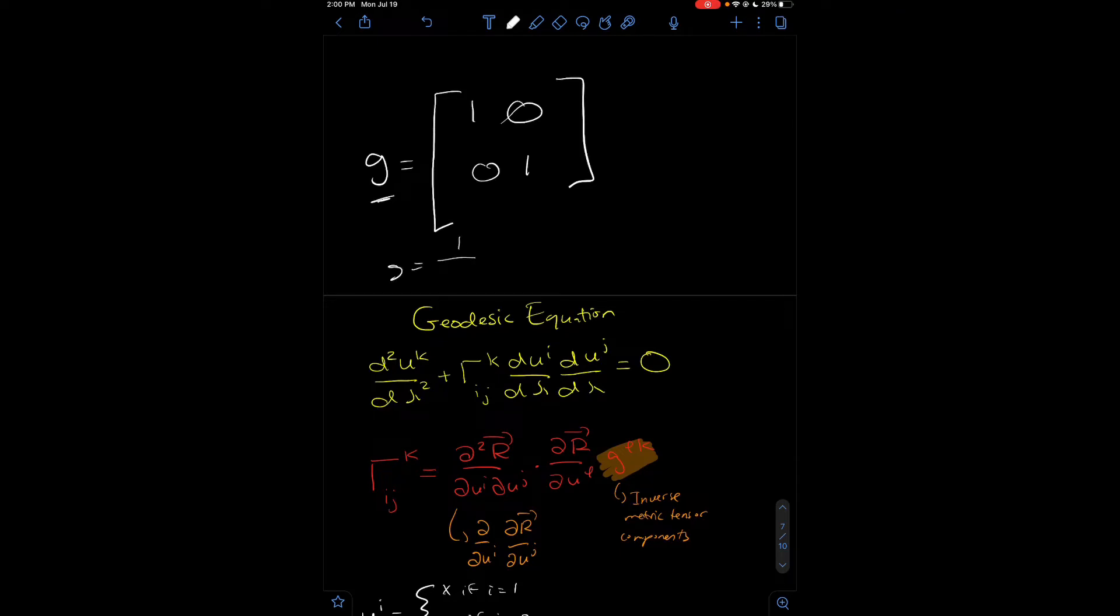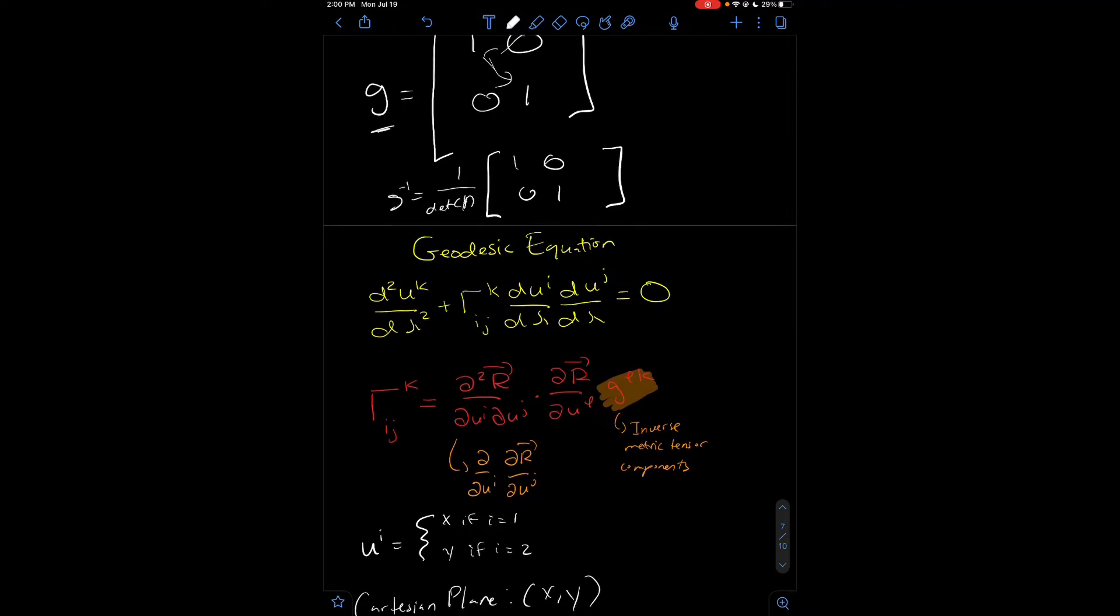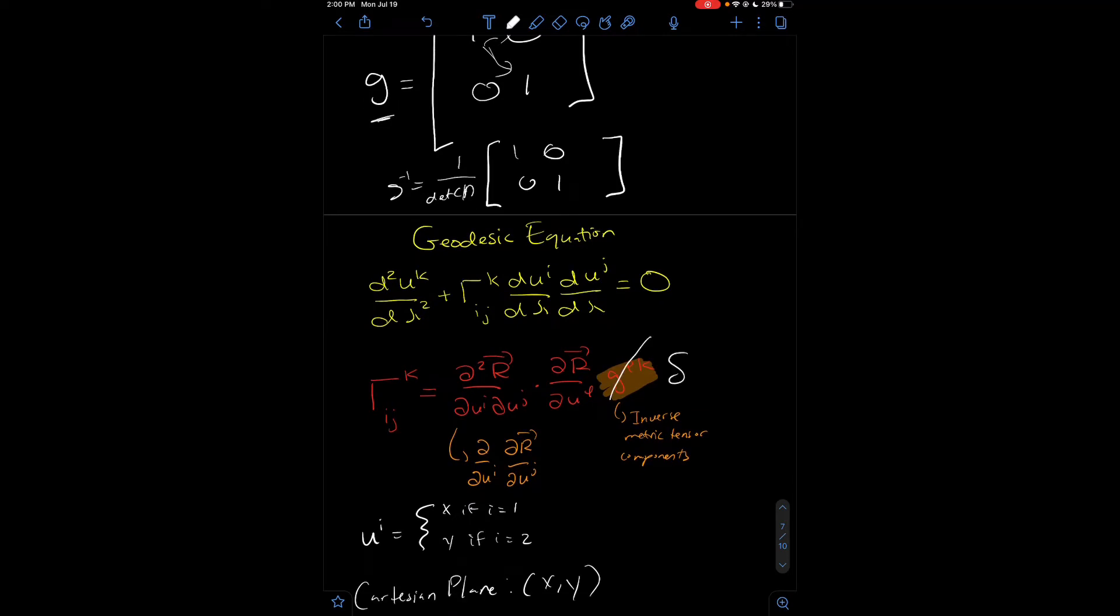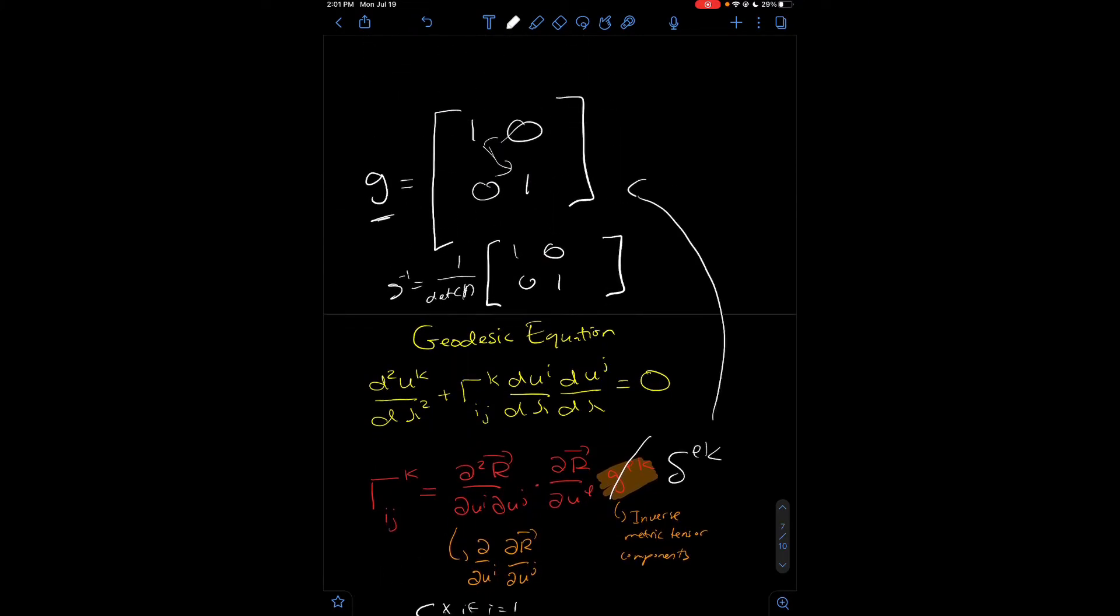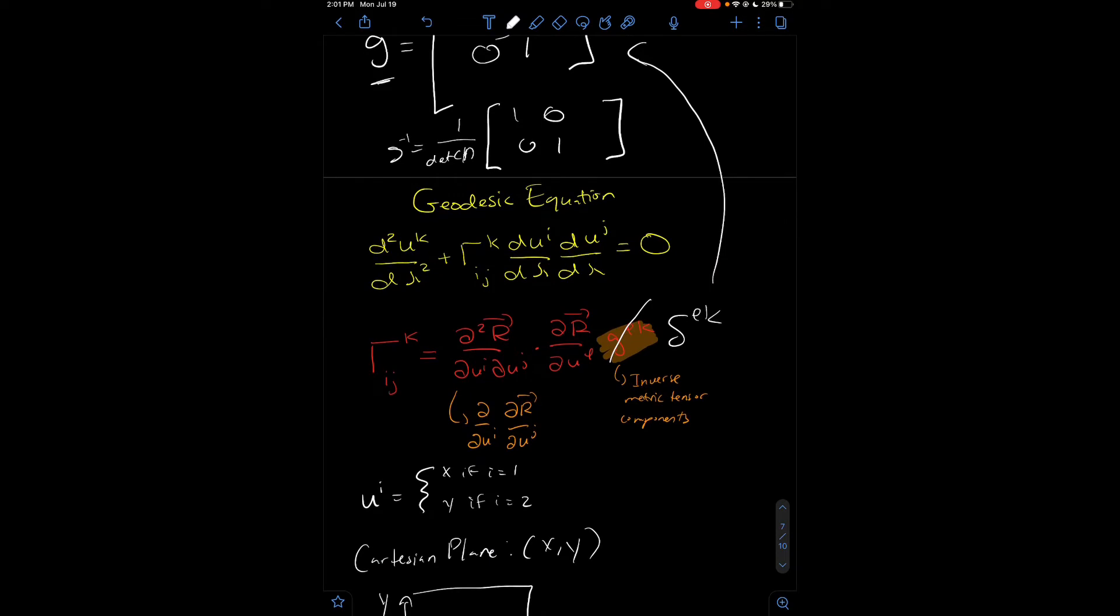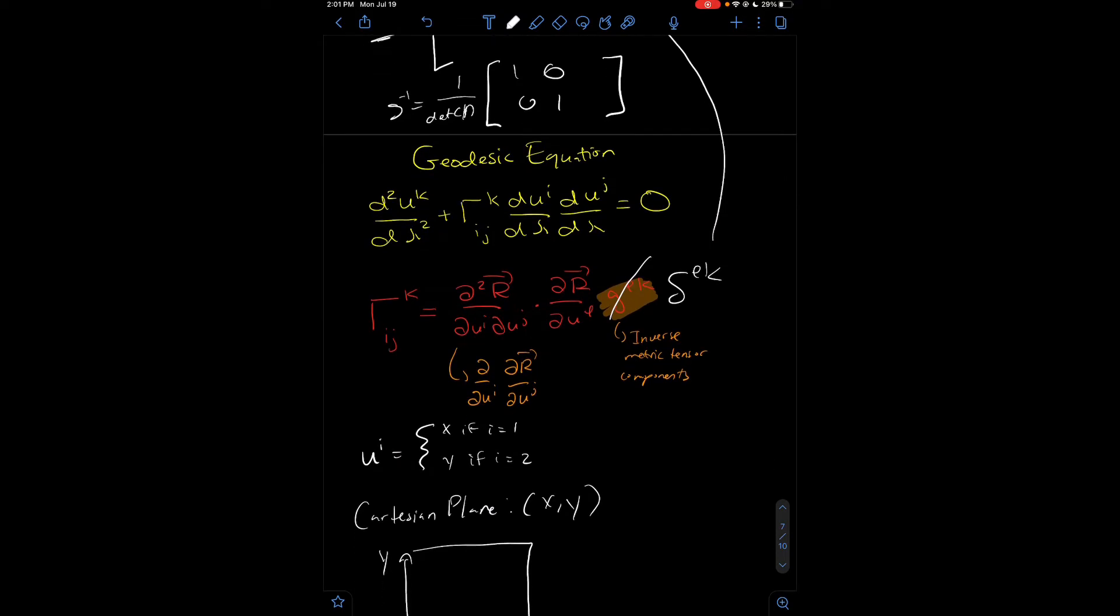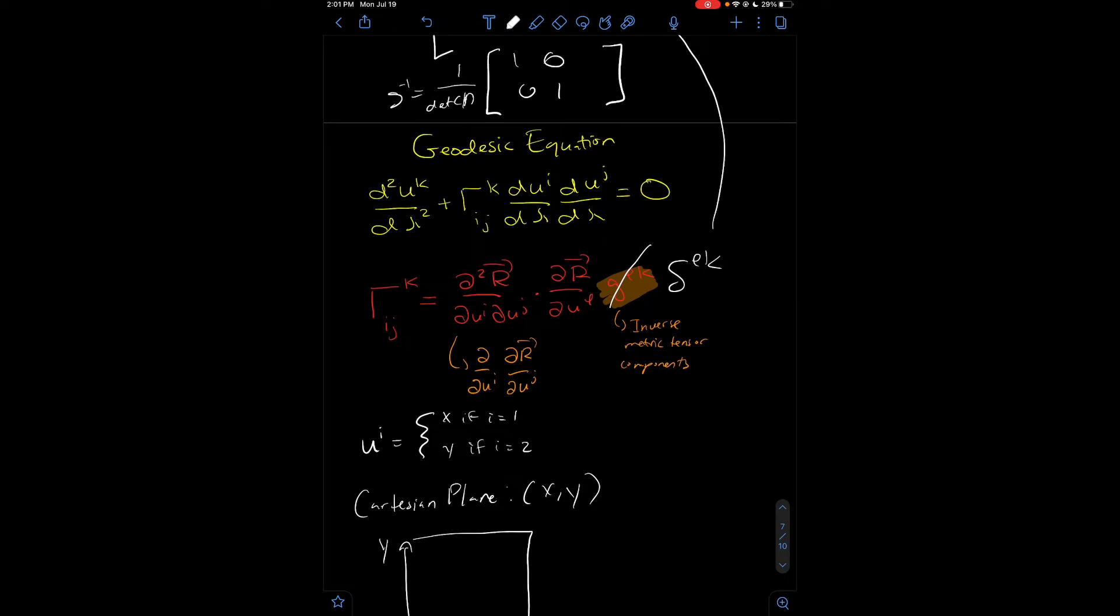So, the inverse of this tensor would just be 1 over the determinant of the tensor times, you would have to flip these around, 1, 0, 0, 1. And 1 over the determinant of this tensor is just 1, so the inverse of the tensor is just the same tensor, it doesn't change at all. So, this would just be the Kronecker delta, since that's what the metric tensor is for Cartesian coordinates.